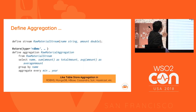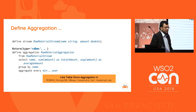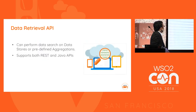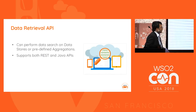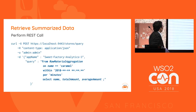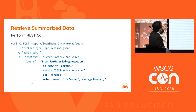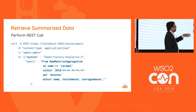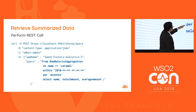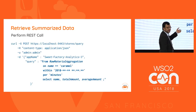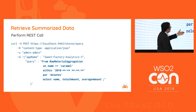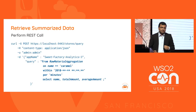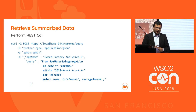We persist the aggregated data into a data store. To retrieve aggregated data over time, we use a query like: from raw material aggregation on name 'caramel' within 2018, get data per minute, select name, total amount, and average amount. The data is already aggregated and persisted in the aggregated table so retrieval is efficient.